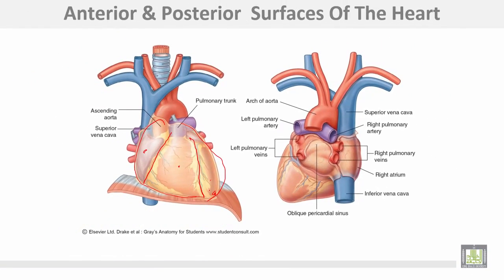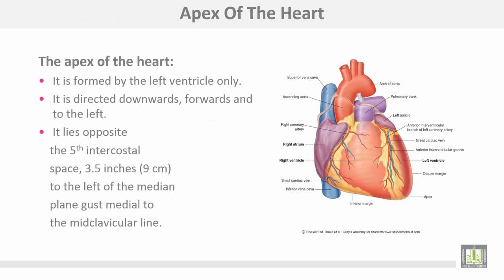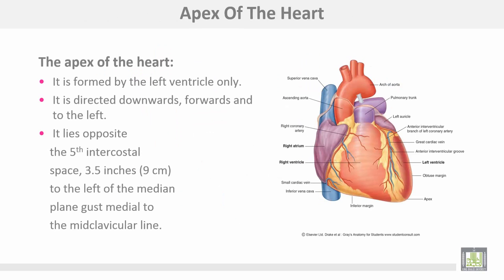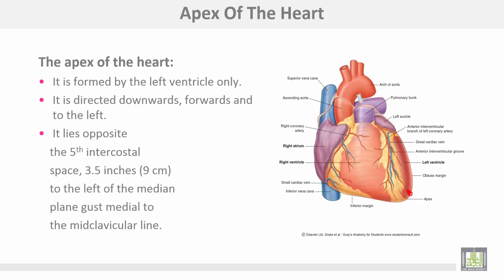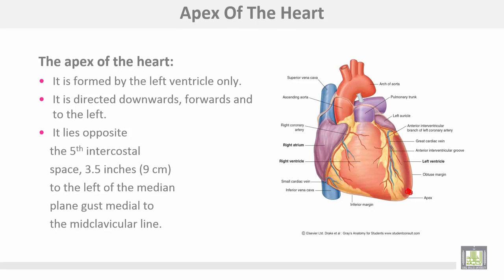The apex is completely formed by the left ventricle. It is directed downwards, forwards, and to the left. It lies opposite the fifth intercostal space on the left side, three and a half inches or nine centimeters to the left of the median plane, just medial to the mid-clavicular line.